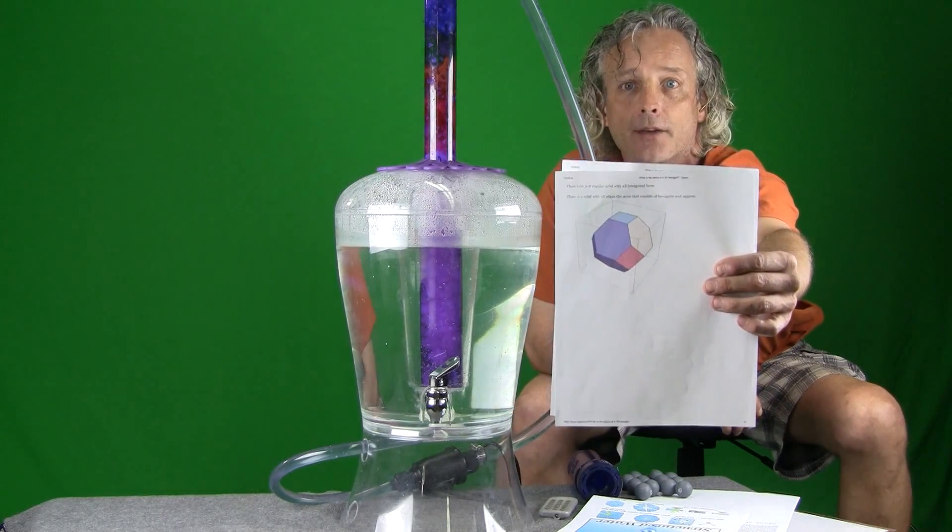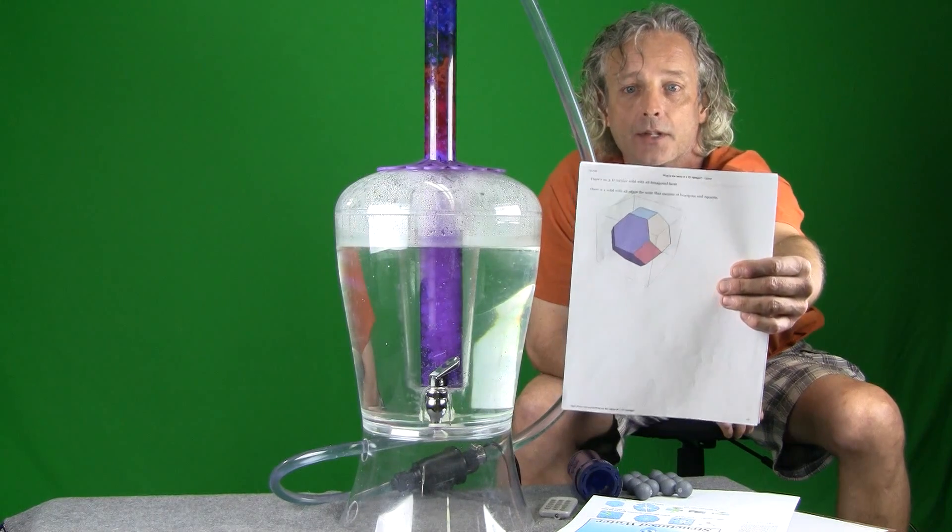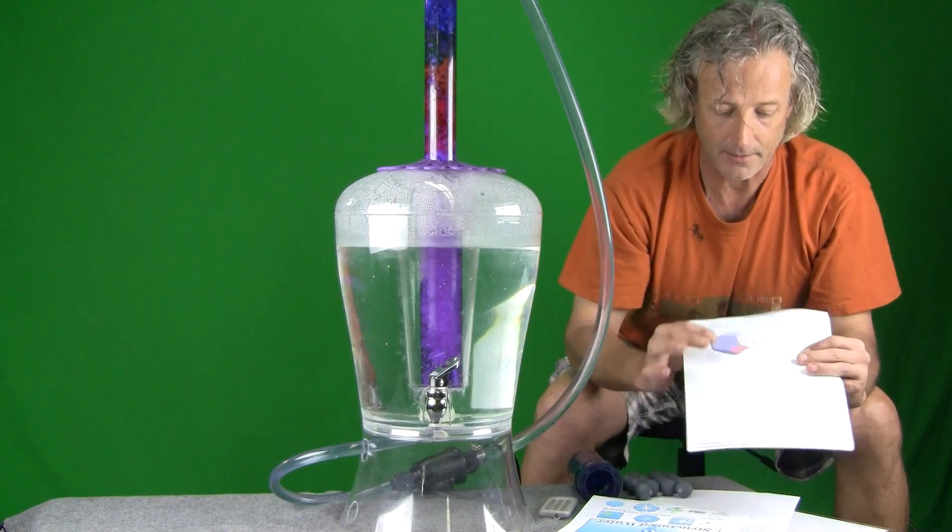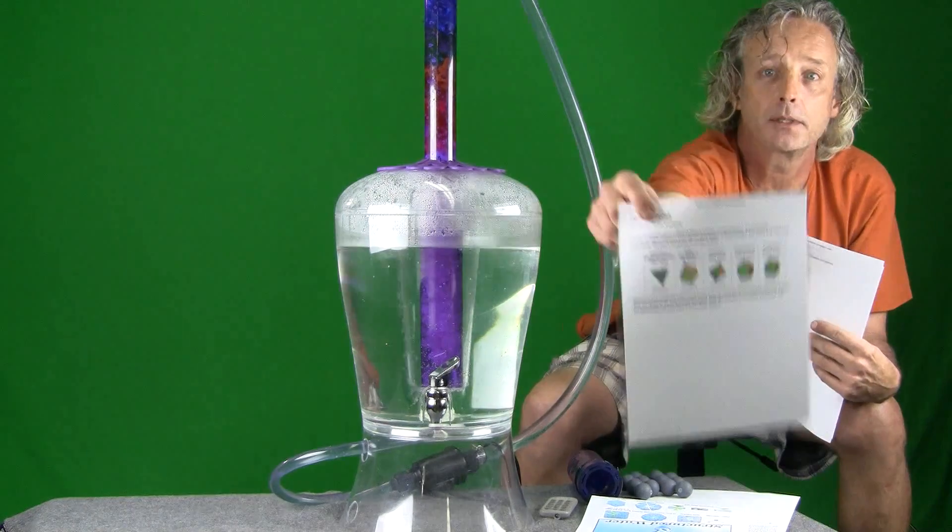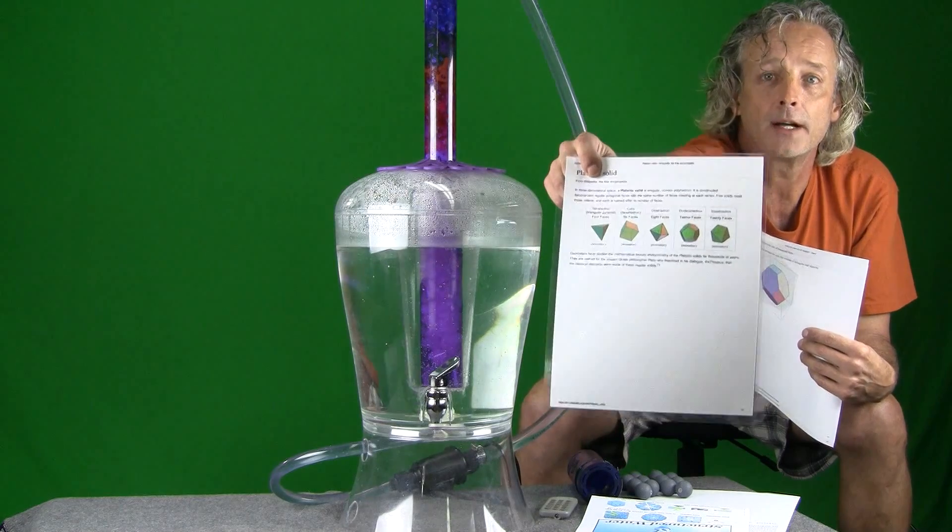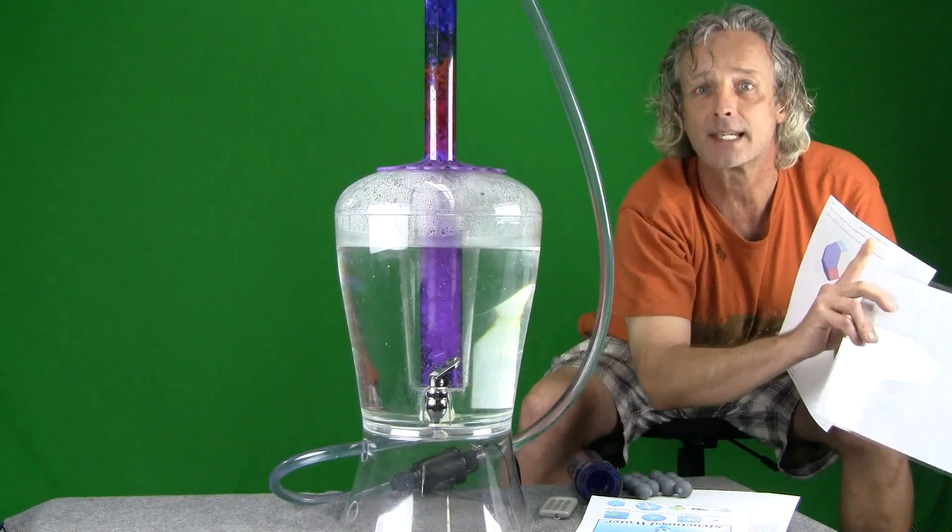If you're going to put hexagons together, the only way to make a cluster is if you have squares that go with it to tie them all together because you can't make - it's not a platonic solid. See, the platonic solids are different. You won't find a hexagonal structure in here because they don't exist. It's not possible.